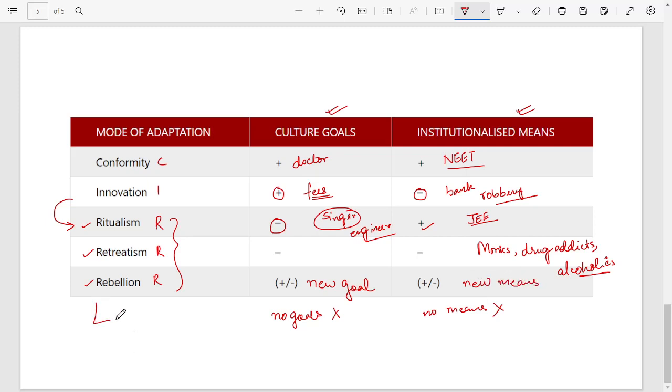So in rebellion we keep those who are terrorists or who are our freedom fighters. So basically these are people whose goal was very different. They did not want to become doctor or engineer, but they wanted to, let's say, make our nation independent, or terrorists who have some different goal. Yes, it's not similar to our day-to-day goals.